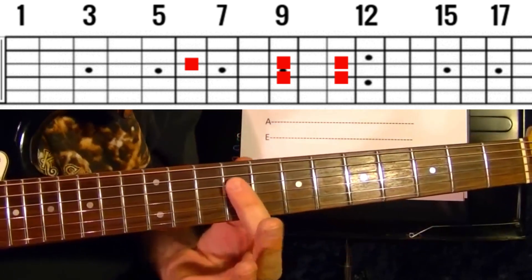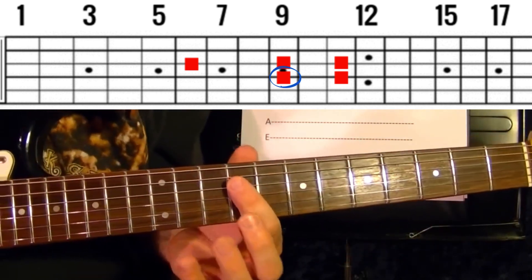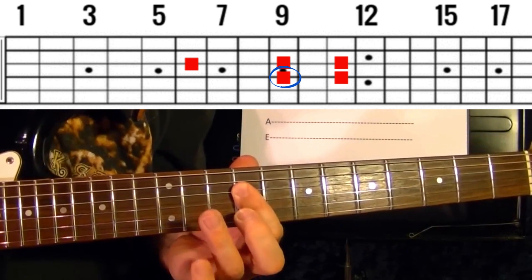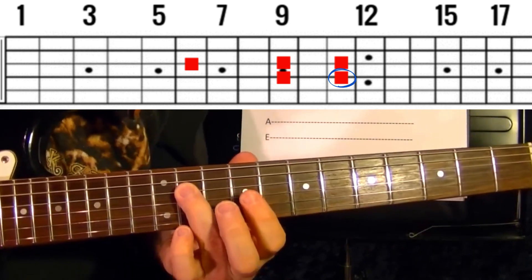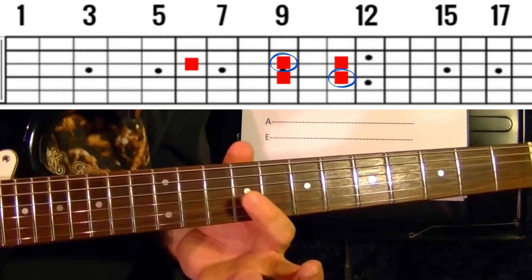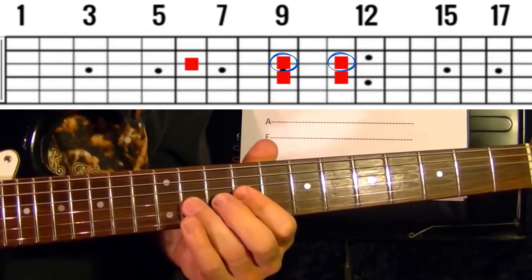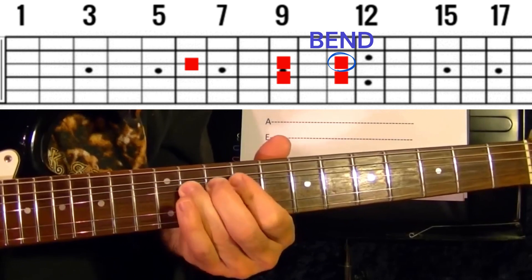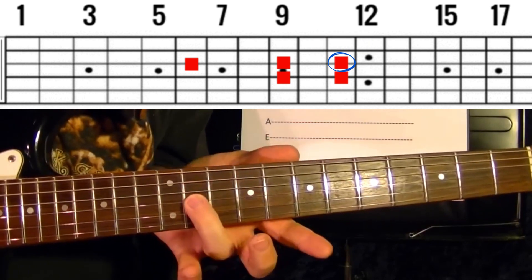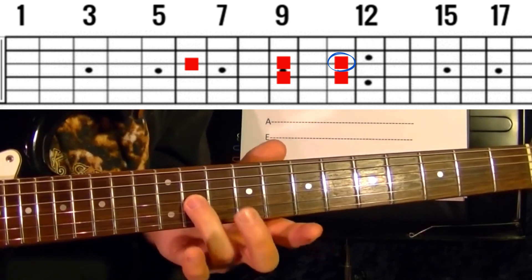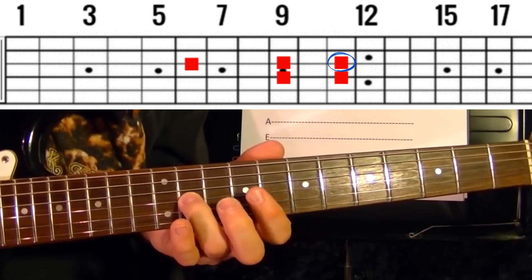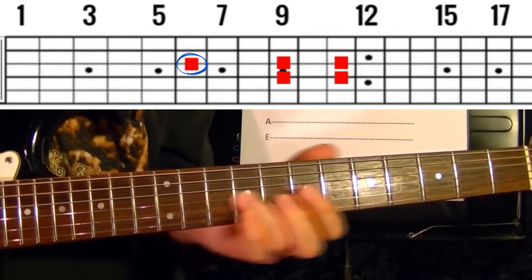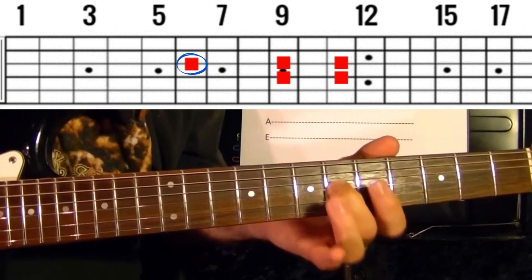The first part is this: fourth string 9th fret, third string 9th, 11th bend up, bend up again, 11th regular, then slide down to the sixth fret.